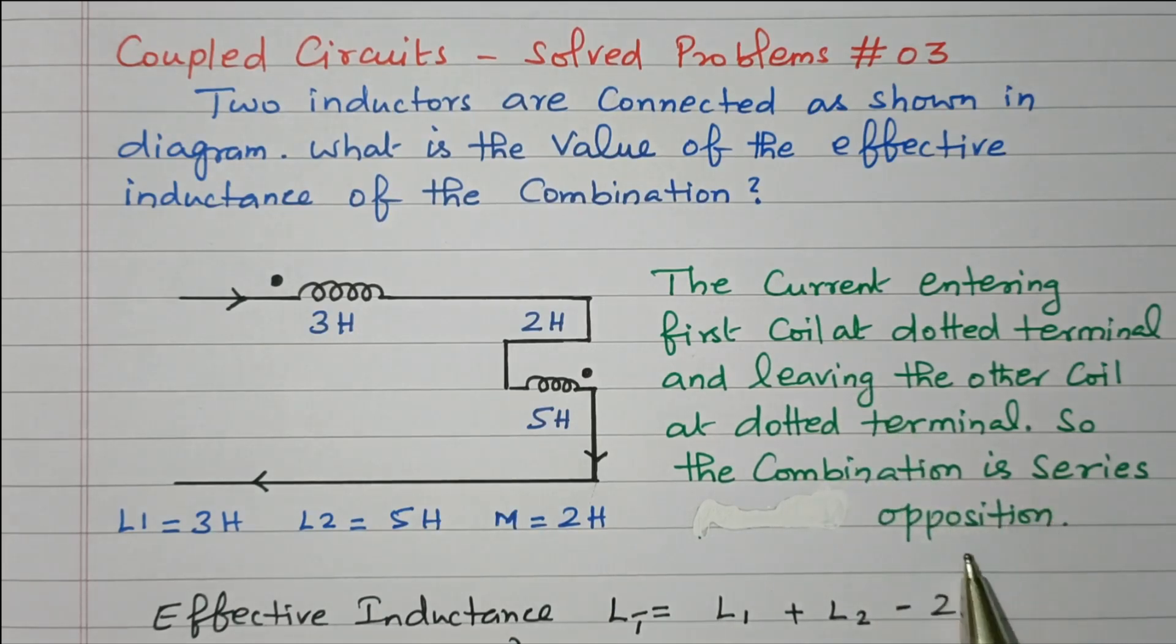If current enters at both coils with dotted end, or both with undotted end, it is series aiding. But when current enters in one coil at the dotted terminal and leaves the other coil at the dotted terminal, it is series opposition.